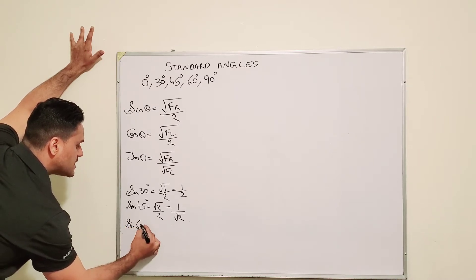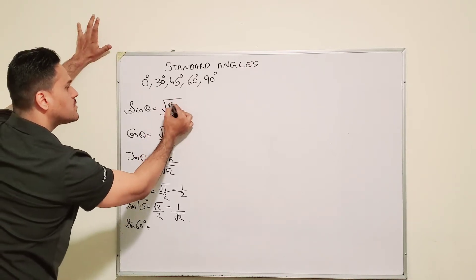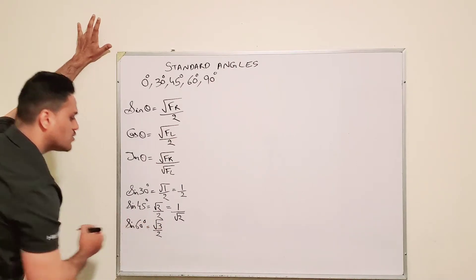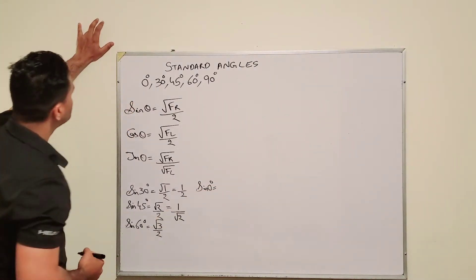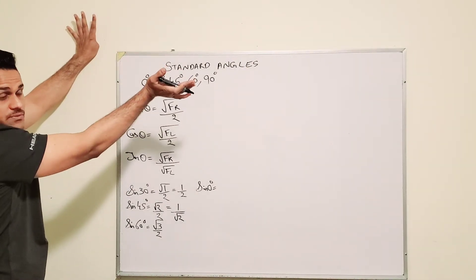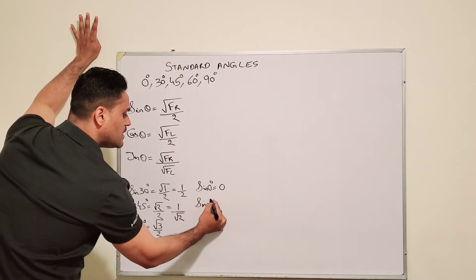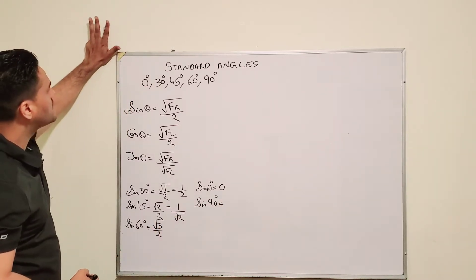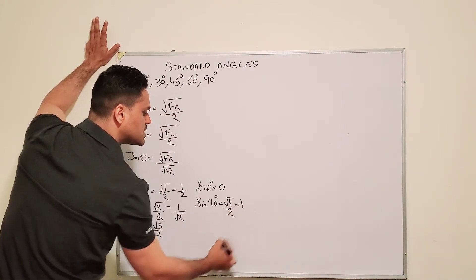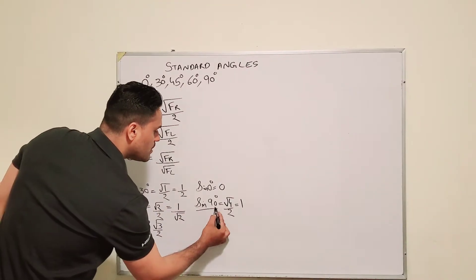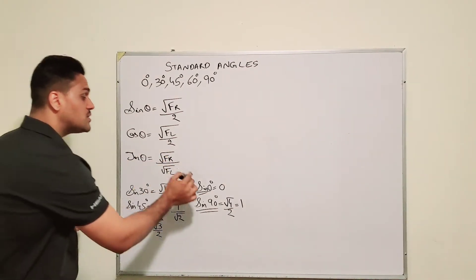To find sine 60, you bend your 60 degree finger. We have three fingers on the right, so it's going to be square root of 3 over 2. For sine 0, we bend the 0 degree finger and see no fingers on the right, so it's square root of 0 over 2, which is 0. To find sine 90, we bend the 90 degree finger and have four fingers on the right: square root of 4 over 2 — square root of 4 is 2, and 2 over 2 is 1. Remember sine 90 and sine 0 off the top of your head, as we'll use these very often.